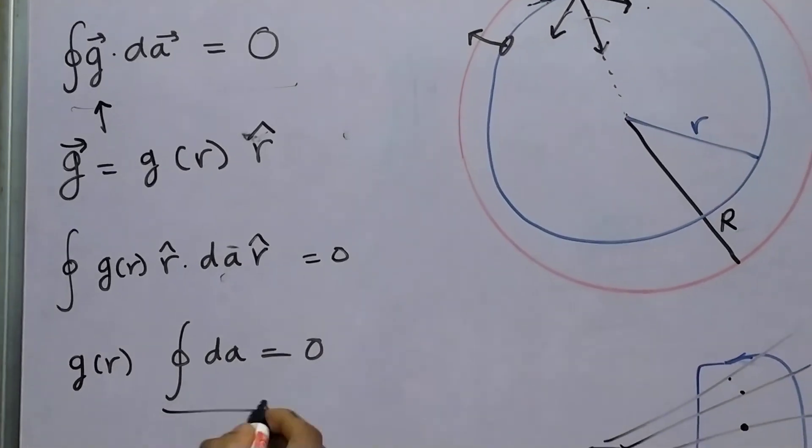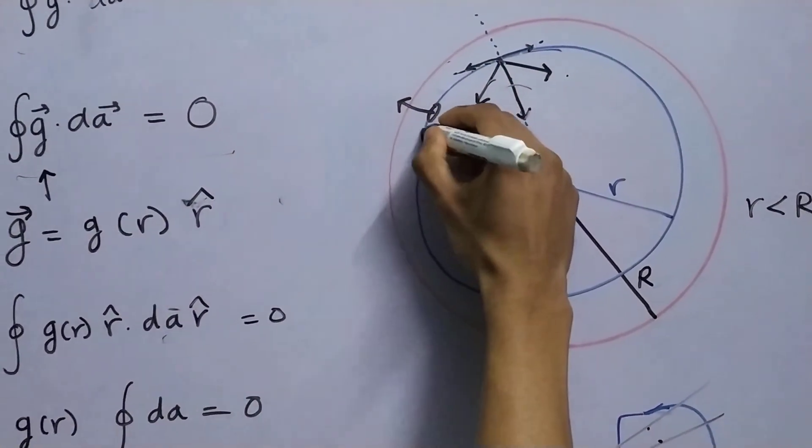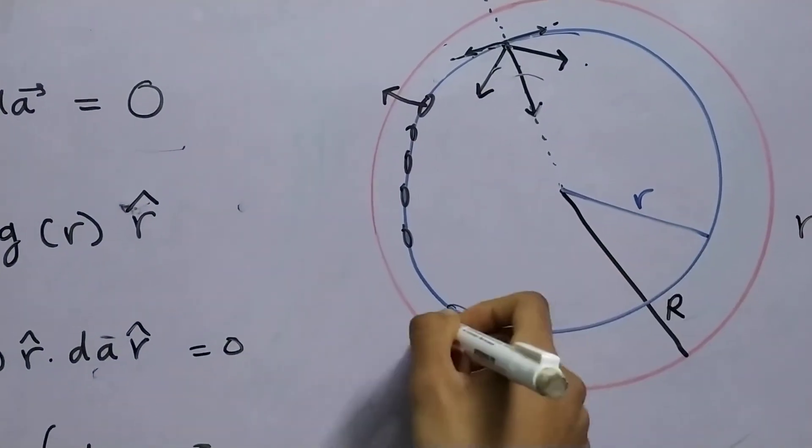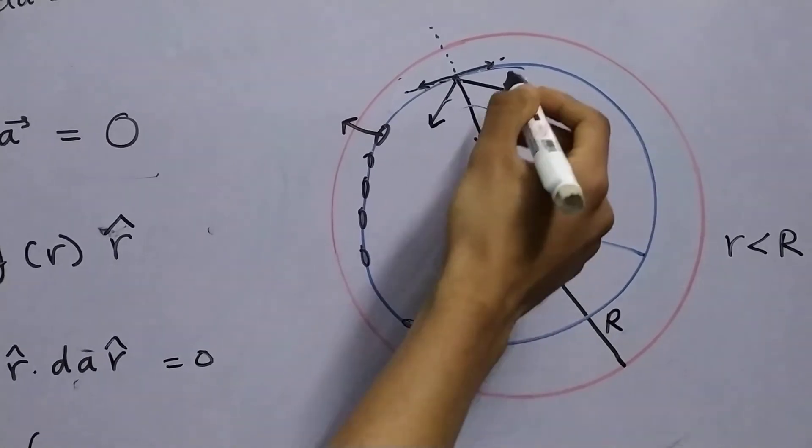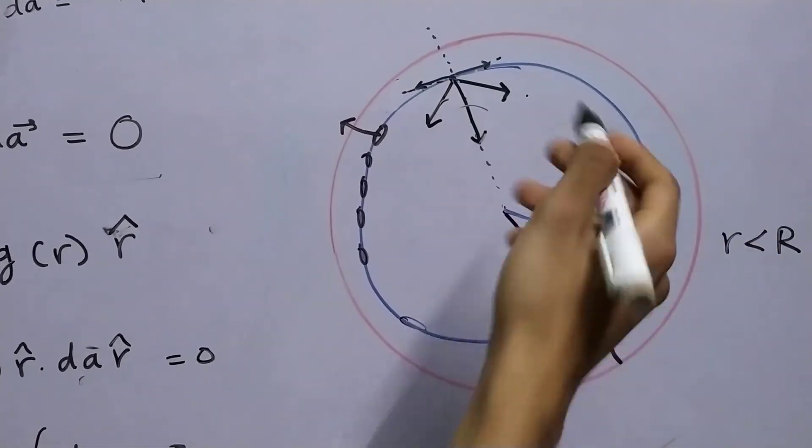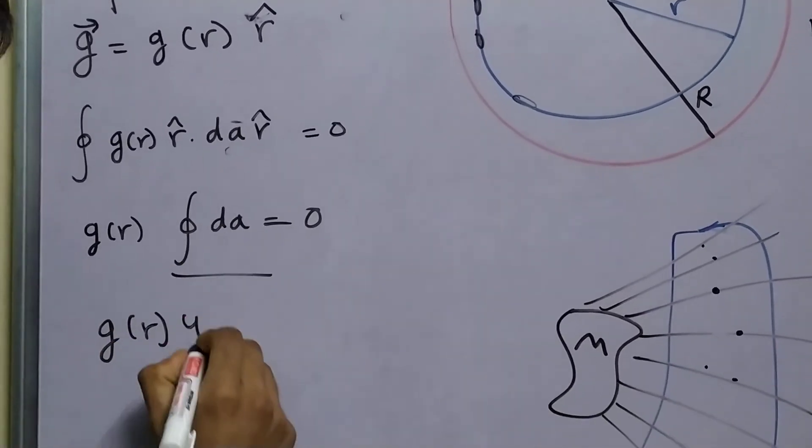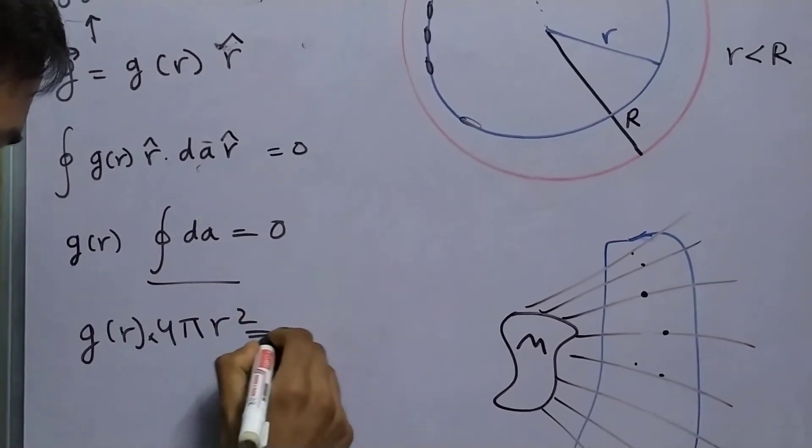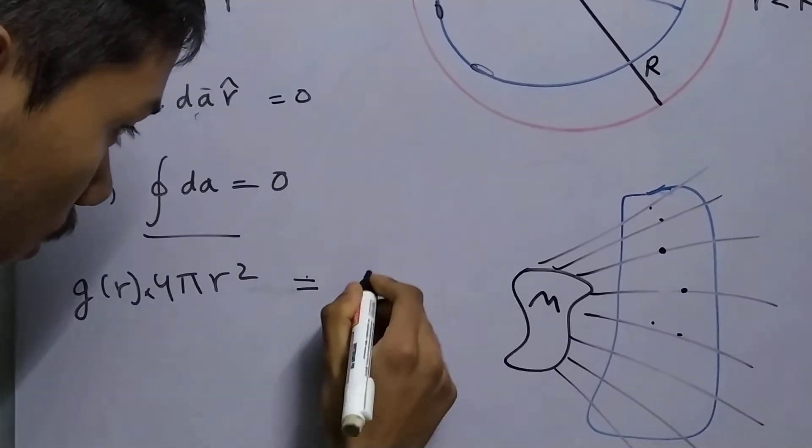Now, this is basically the sum of all such small elements on the surface of a sphere, area elements on the surface of a sphere having a radius r, which basically means the surface area of a sphere having a radius small r. So, this will be 4 pi r square. So, we get g of r into 4 pi r square being equal to zero.